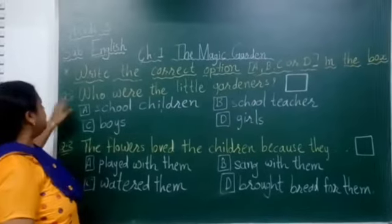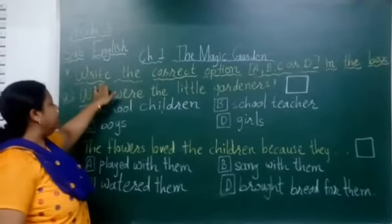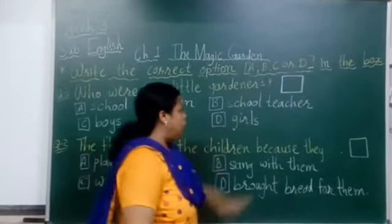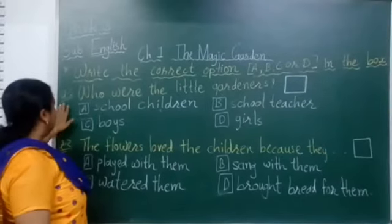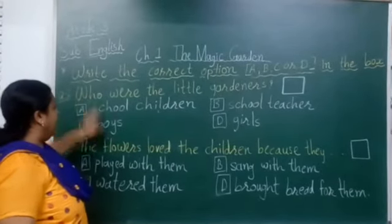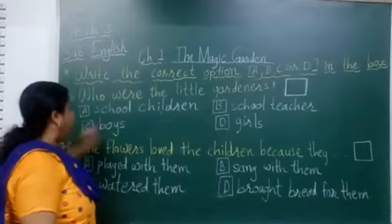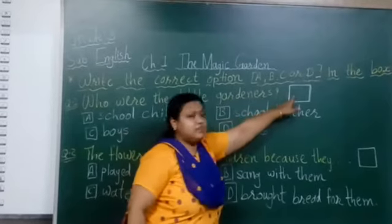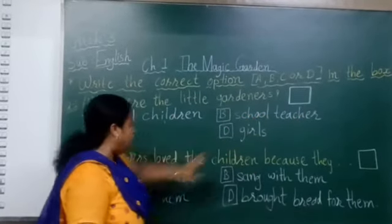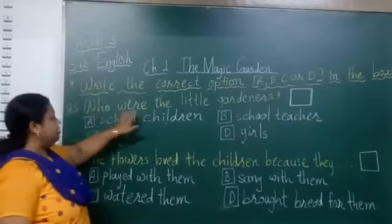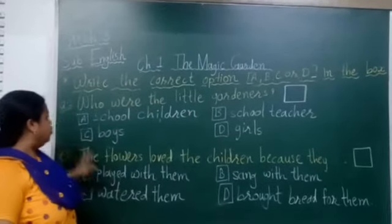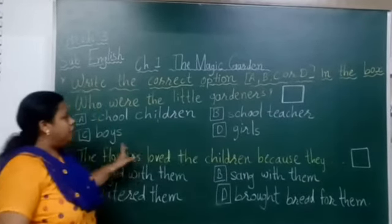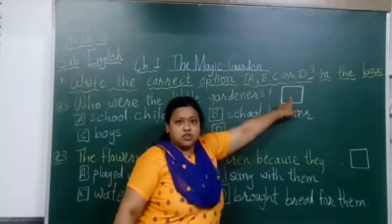Now we start our next exercise: Write the correct option A, B, C, or D in the box. In this exercise there are questions with four options. You choose the one right option and write it in the box. We read the question, then choose the correct option from A, B, C, or D and write the answer in the box.